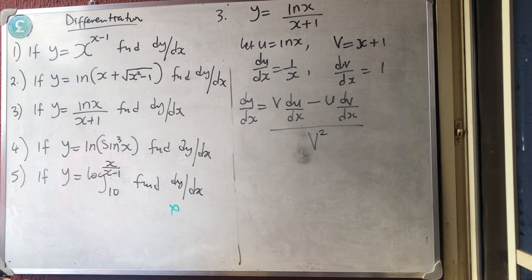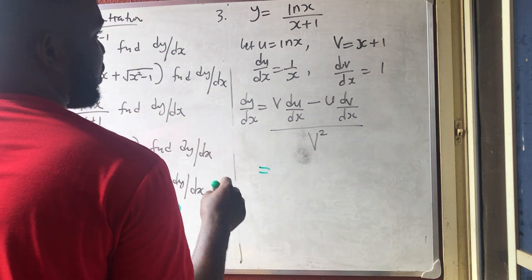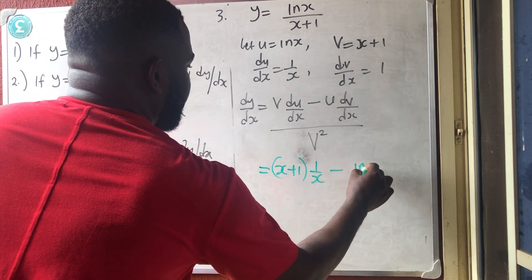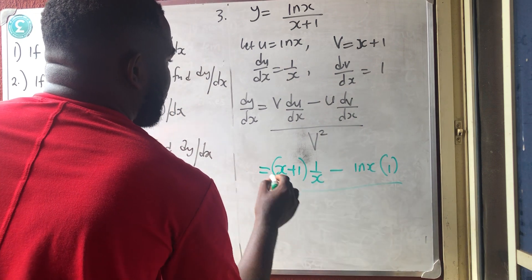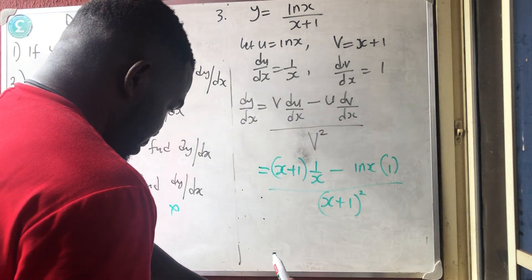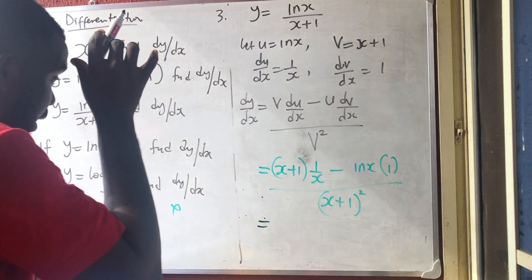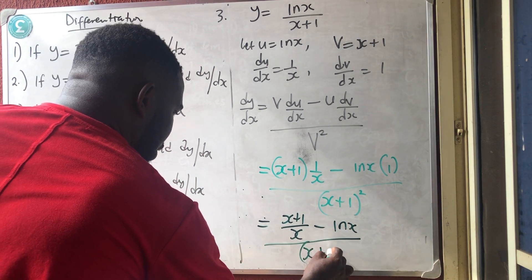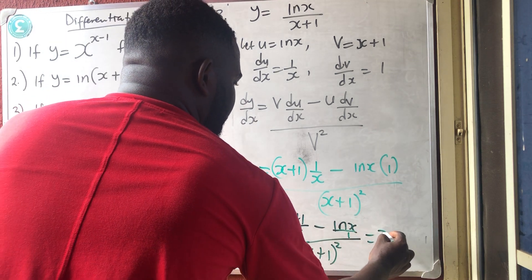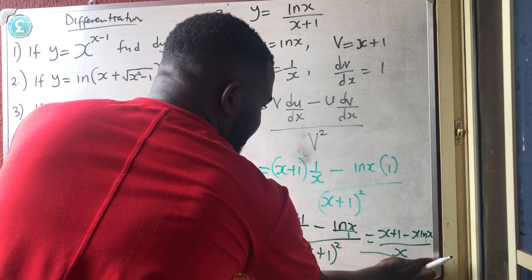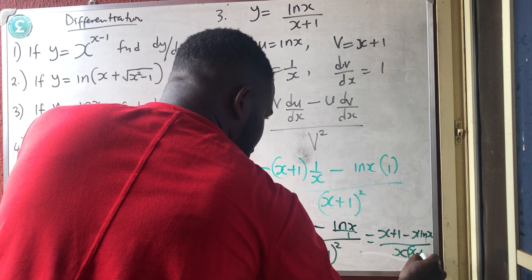Applying the formula: dy/dx equals (x+1)·(1/x) minus ln x·(1), all over (x+1) squared. Simplifying by combining the fraction using LCM gives (x+1 minus x·ln x) over x, all over (x+1) squared, which equals (x+1 minus x·ln x) over x(x+1)².